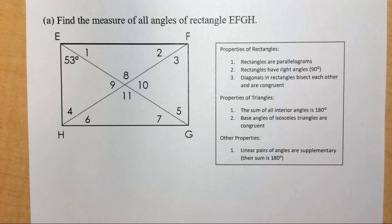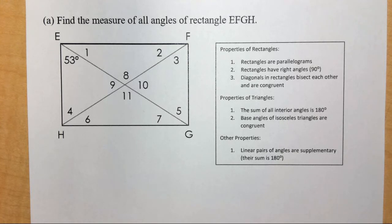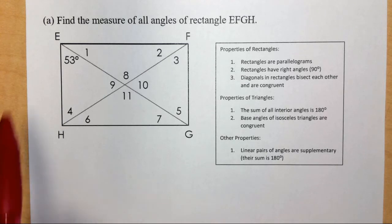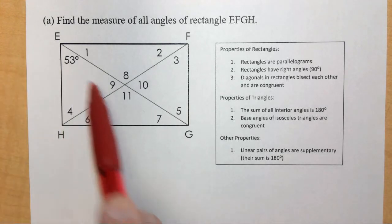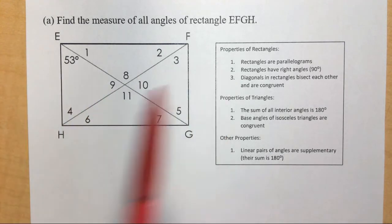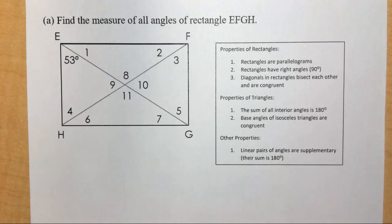We need to know some properties of rectangles, some properties of triangles, and a couple of other things we've learned along the way. First, rectangles are parallelograms, and since they're parallelograms their opposite sides are parallel. When we have a diagonal or a transversal cutting through those parallel sides, there are going to be some alternate interior angles created.